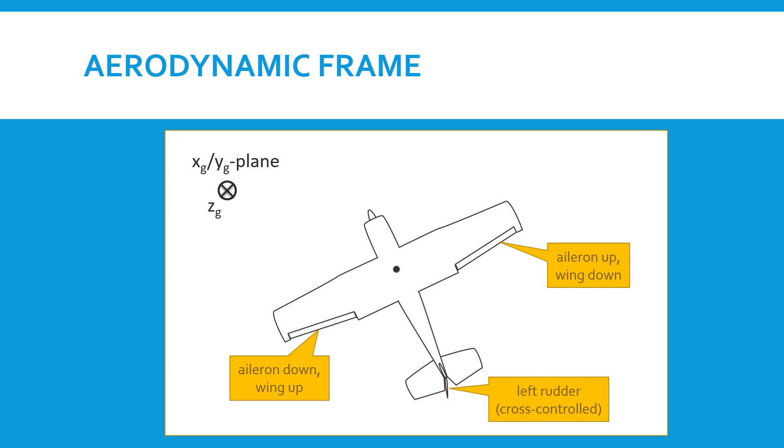But we're cross-controlling it—we're putting in left rudder instead of right rudder. If we put in right rudder, of course, the aircraft would just turn to the right, but by cross-controlling it like this, we hold the aircraft in this awkward position.